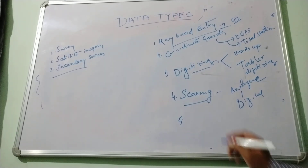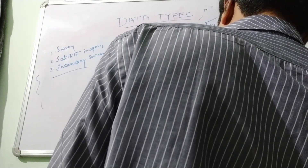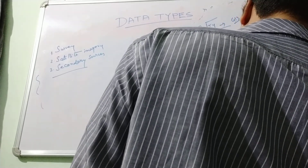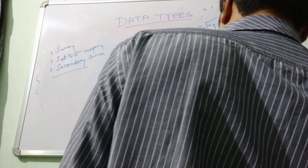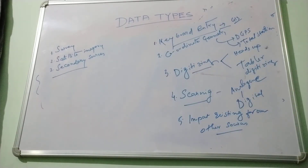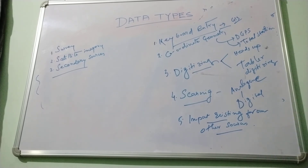We can also input existing data from other sources, like different types of data available on websites or from other sources. We can collect the data, recheck it, re-modify it, convert it into the required format for the GIS database, and enter it into the GIS platform.